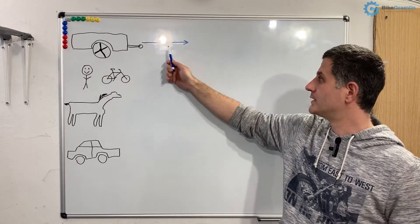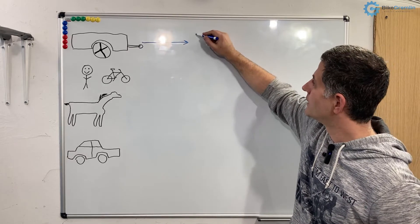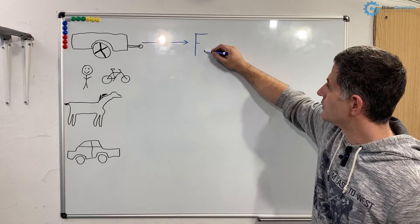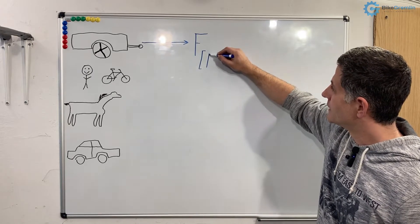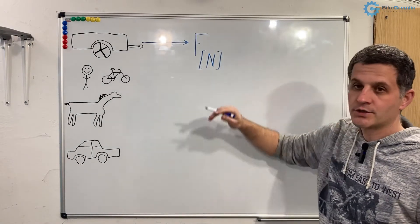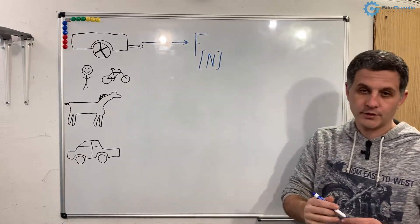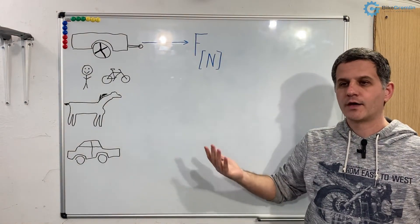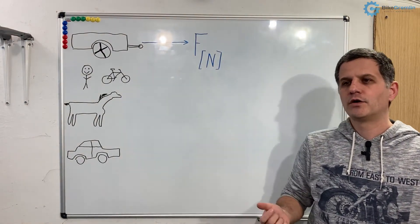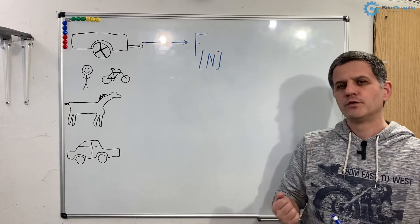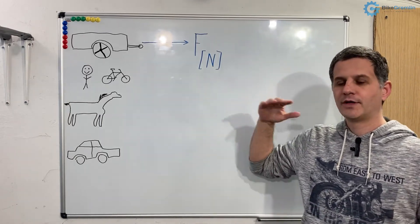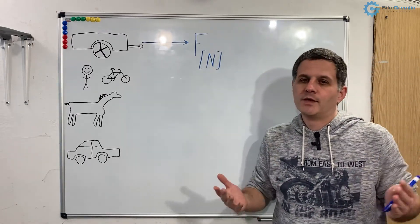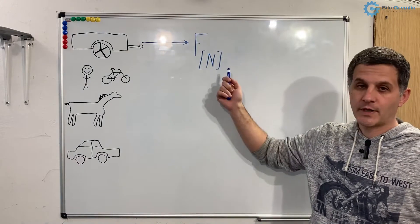So force has both intensity and direction and I will sign it as letter F and force is measured in newtons. That is the international unit for measuring and expressing force so that we do not rely on 'I was pulling moderately strongly' or 'almost full strength.' This is comparable, measurable and we can use it for calculations.